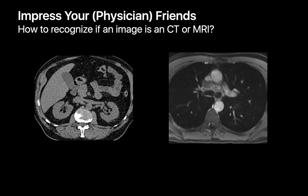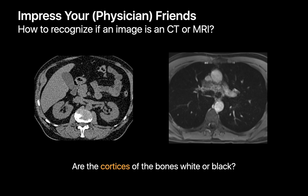One last tip before we finish: how do you recognize if an image you're being shown is a CT or an MR image? Look at the margins of the bones, where the bone cortex is. If the bone cortex looks white, you're looking at a CT. If the bone cortex looks black or very dark gray, you're looking at an MRI. That's because dense calcium blocks x-ray beams well but contains few hydrogen atoms for MR imaging.